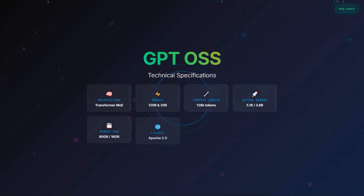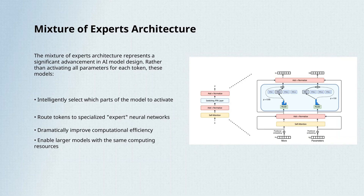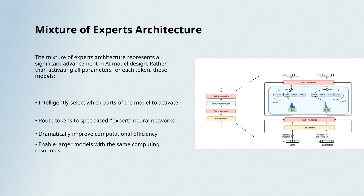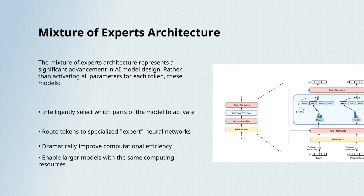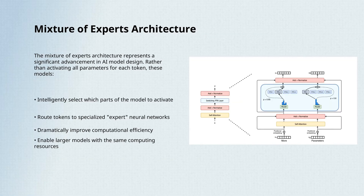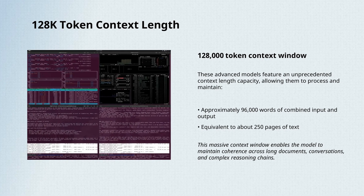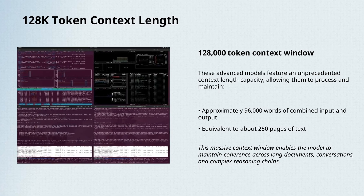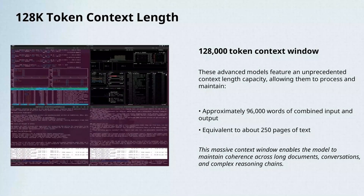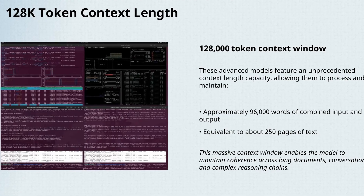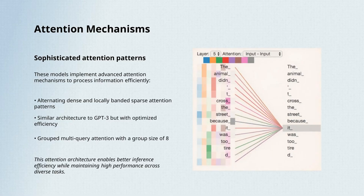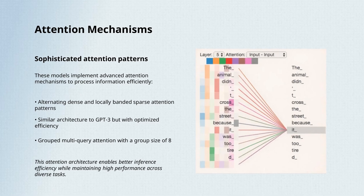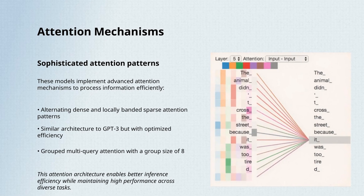Let's talk about the technical specs, because this is where things get really interesting. Both models use a mixture of experts architecture, which means they're not using all their parameters at once. Instead, they intelligently select which parts of the model to activate for each token, making them way more efficient. They've got a 128,000 token context length, which translates to about 96,000 words of combined input and output. The models use alternating dense and locally banded sparse attention patterns, similar to GPT-3, and they've implemented grouped multi-query attention with a group size of 8 for better inference efficiency.